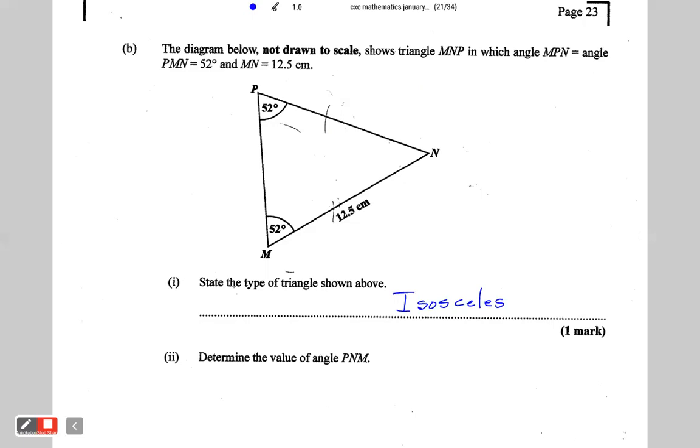Alright. If it's an isosceles triangle, this would be the base, this would be the apex, and these two sides would be equal. The two equal sides always go to the apex. So if this is 12.5, this is also 12.5 centimeters.